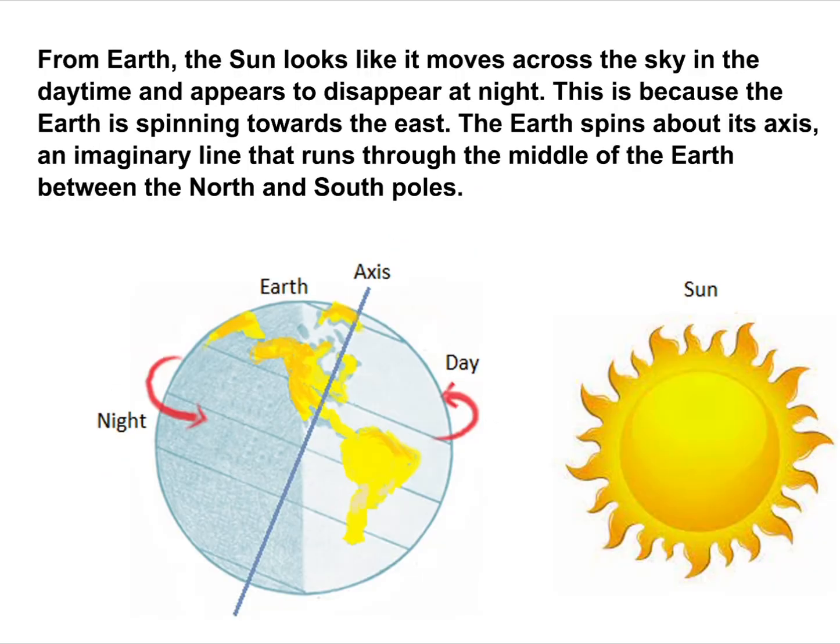From Earth, the sun looks like it moves across the sky in the daytime and appears to disappear at night. This is because the Earth is spinning towards the east.